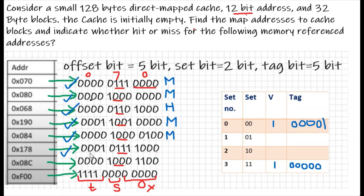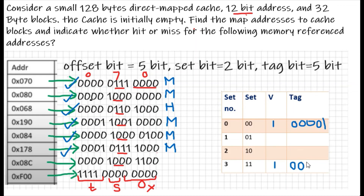Next address has set bits 11 and tag 00010. Comparing with the stored tag 00000 — they don't match, so it's a miss. We update the tag to 00010.